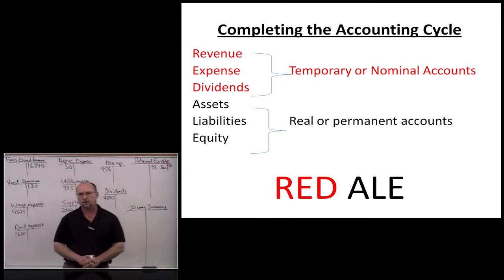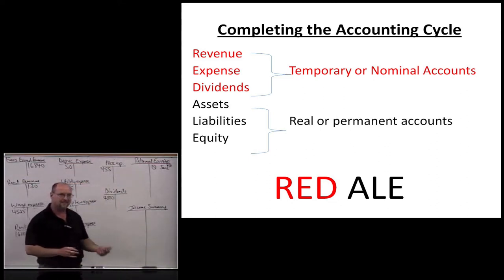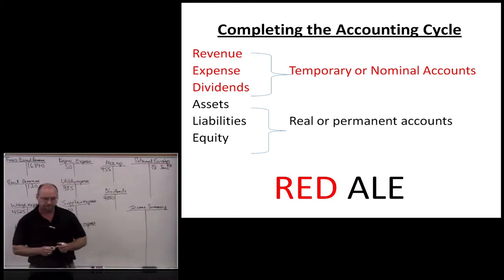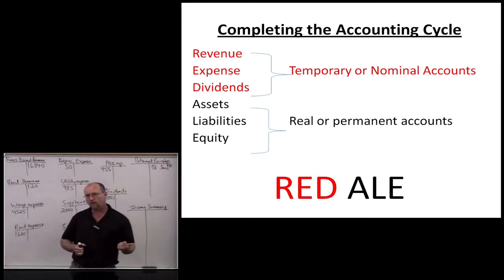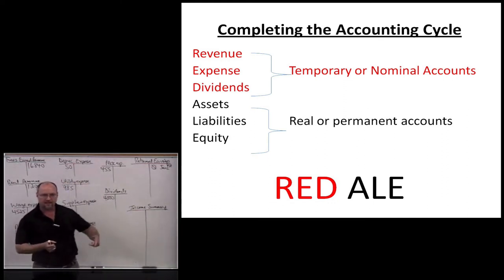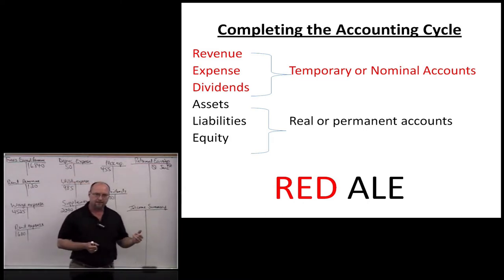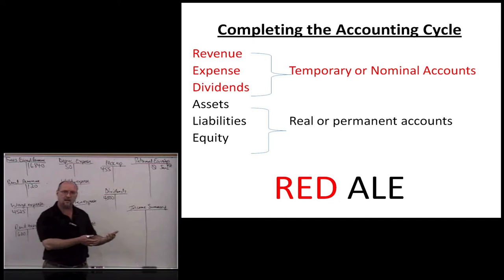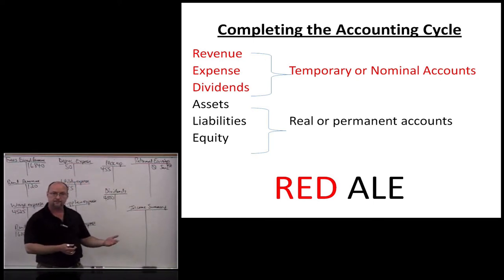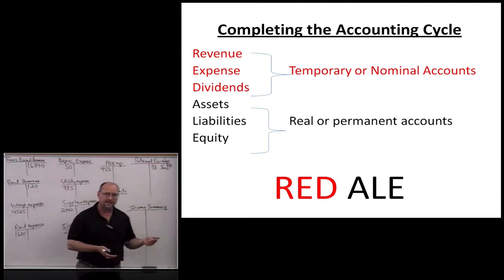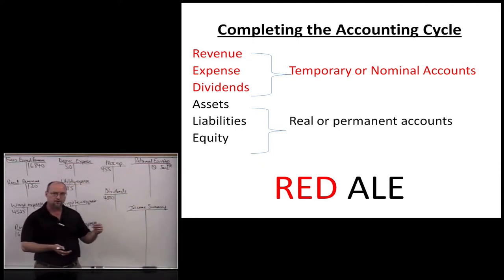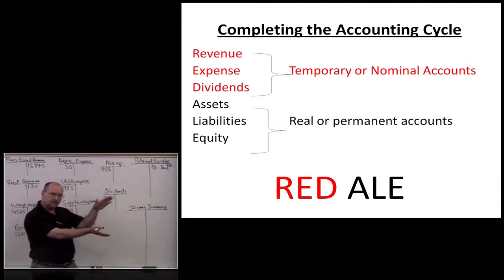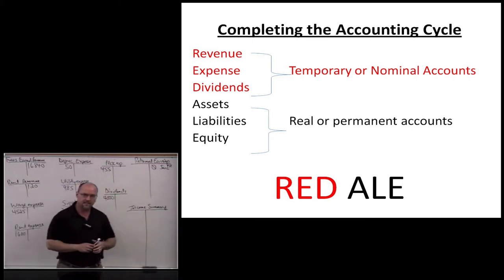Today we're going to look at the closing process and complete the accounting cycle. Let's review what we've done so far. The accounting cycle: first, a transaction occurs, so we analyze and record the transaction in the journal. We record a journal entry. Second, we post — post means transfer — so we split the debit and credit to the various T-accounts. The T-accounts are found in the general ledger.